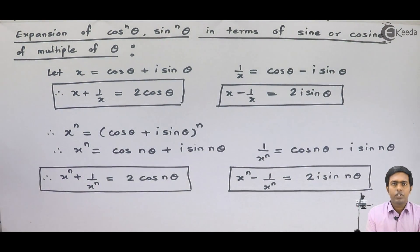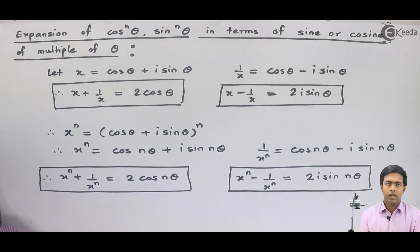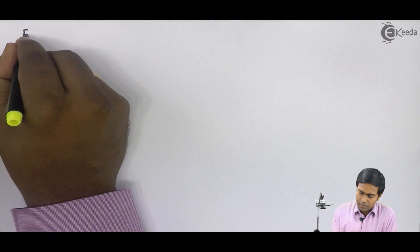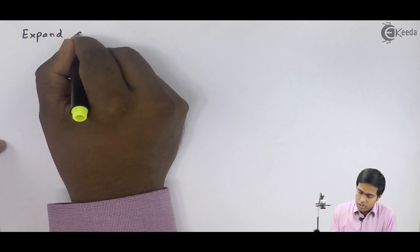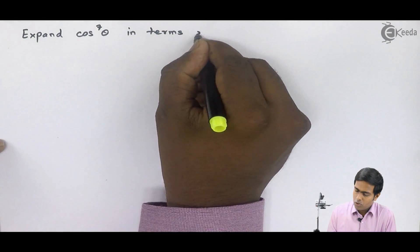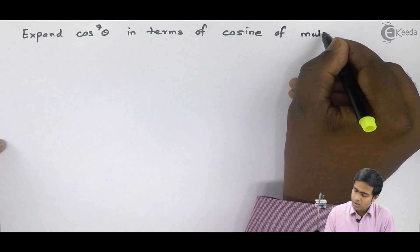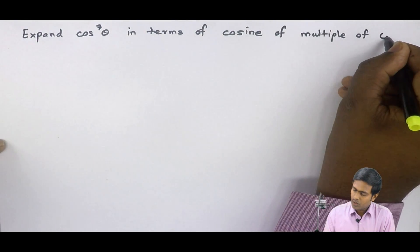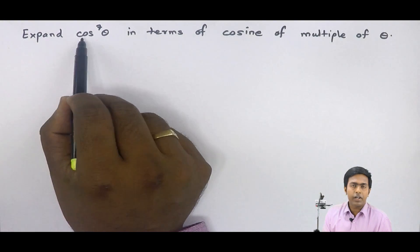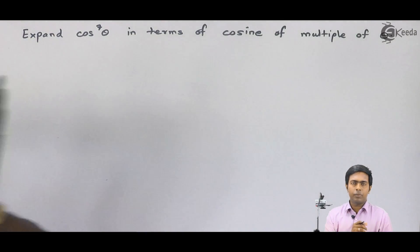Now, let us see some problems where we will apply these four formulas and find out the answer as required. The first problem is: expand cos raised to 7 theta in terms of cosine of multiples of theta. Here we have to expand this power of trigonometric ratios in terms of multiples of theta, so we will apply the previous method.